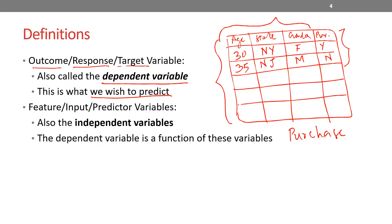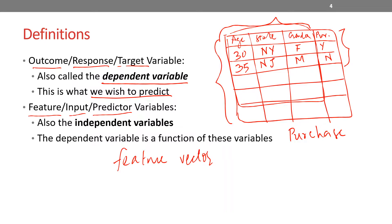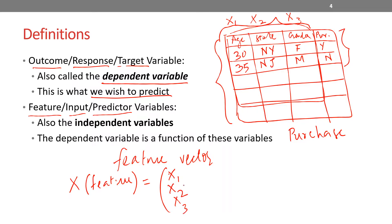The rest of the variables are somehow related to this outcome. Age, state, and gender are in some way impacting this outcome variable — which is what we need to figure out. All these input variables together are known as independent variables, also called feature, input, or predictor variables. We call this entire set the feature vector. One notation we use throughout is that the feature vector is represented by x. So x is my feature vector, comprising different features — for example, age as x1, state as x2, gender as x3, and so on.